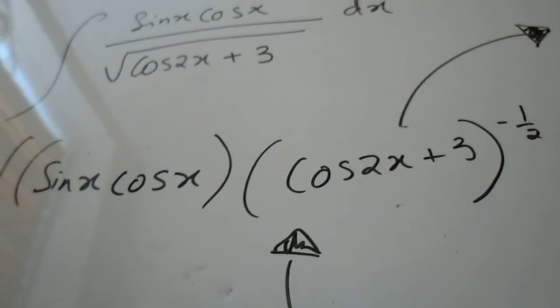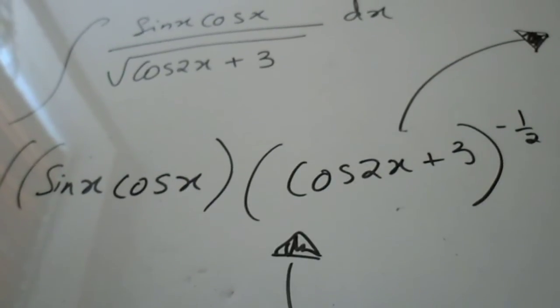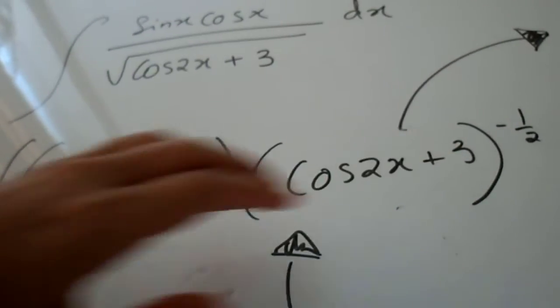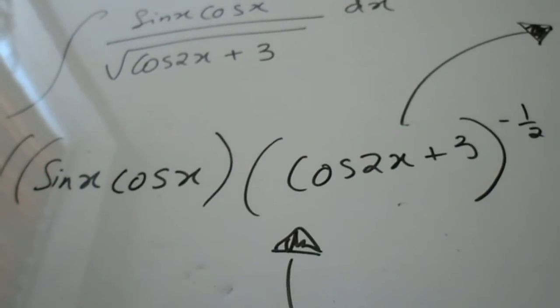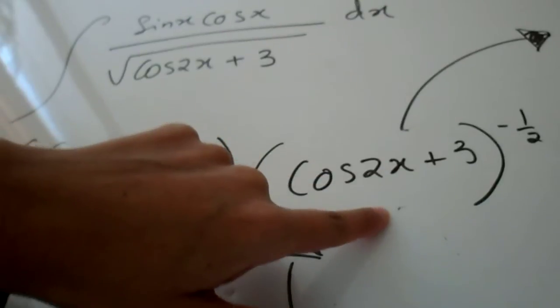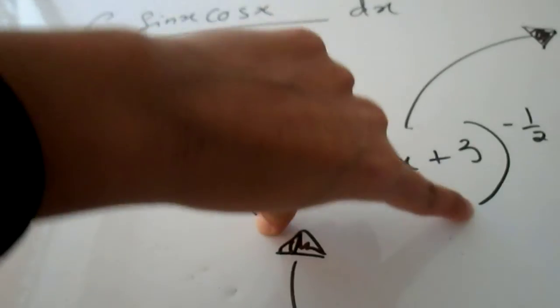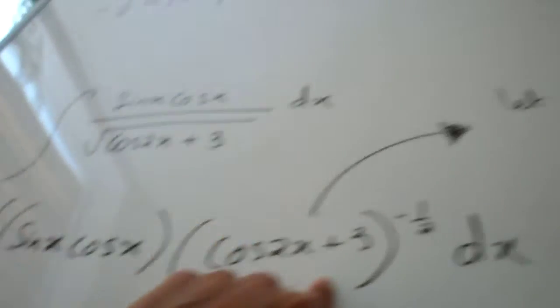The next step is for you to now decide which one out of the 2 here you'd equate to y. In general equate the more complex one out of the 2 to y. So if you equate the more complex one to y which in this case is cos 2x plus 3.